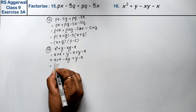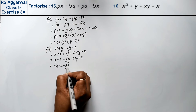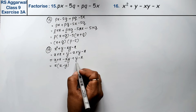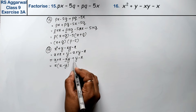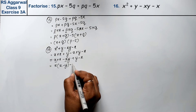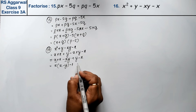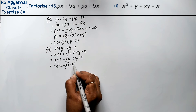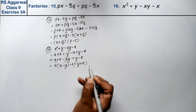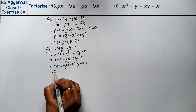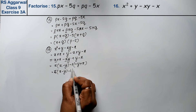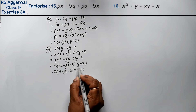From the first pair, taking x common gives x minus y. For the second pair, we take minus 1 common from the inside, and we change the sign, giving minus y plus x, which we write as x into x minus y, minus 1 into x minus y.